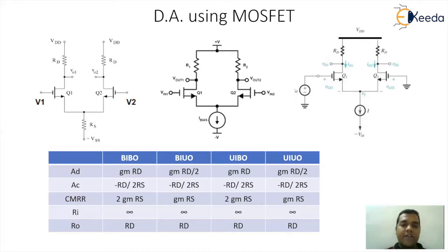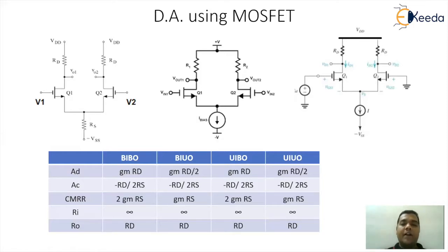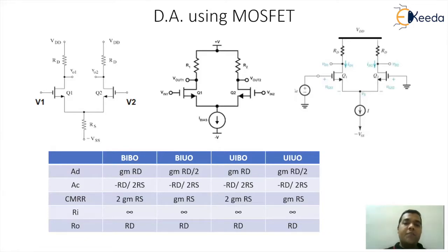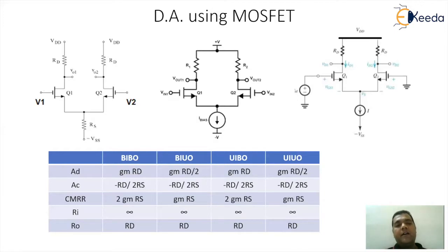The gain relations follow similar logic to BJT. For balanced input balanced output configuration: differential gain AD = gm·RD, common mode gain AC = −RD / (2RS), CMRR = 2·gm·RS, input resistance is infinity, and output resistance is RD. For balanced input unbalanced output: AD = gm·RD / 2, AC = −RD / (2RS), CMRR = gm·RS, RI = infinity, RO = RD.